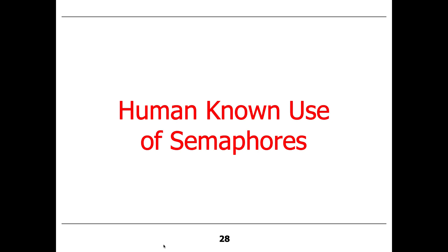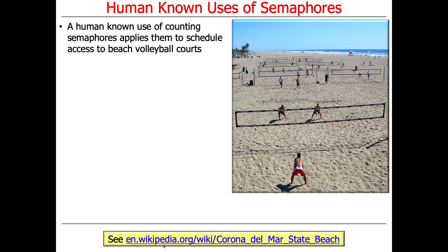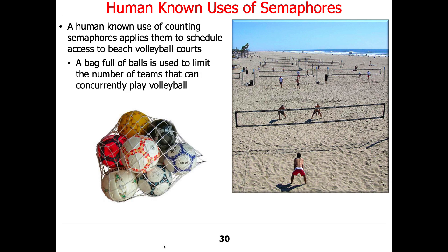My favorite human known use of semaphores is the beach volleyball scenario. You've got a bunch of volleyball courts — the beach volleyball courts at Corona Del Mar, a beautiful beach in Southern California. There's always more teams that want to play than there are courts. You could have a basket full of beach volleyballs with one ball per court. Each pair of teams wanting to play sends a representative to get a ball; if there's a ball, they take it and then find an available court. Having the ball doesn't tell you which court — just that one is available. When you're done, you put the ball back. If there are no balls, all courts are in use.